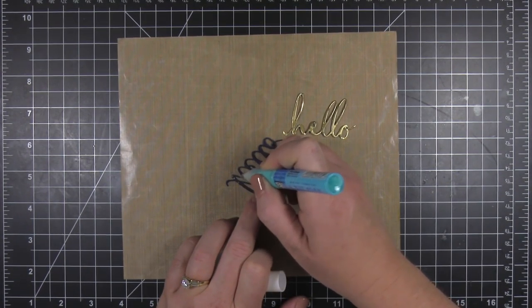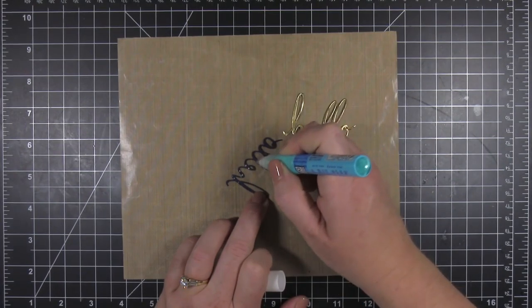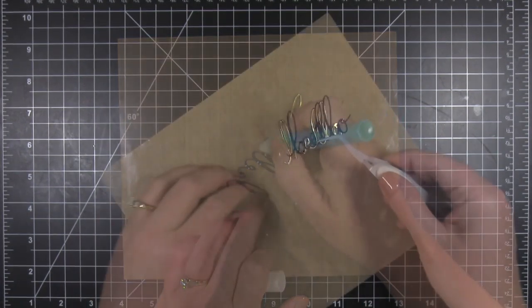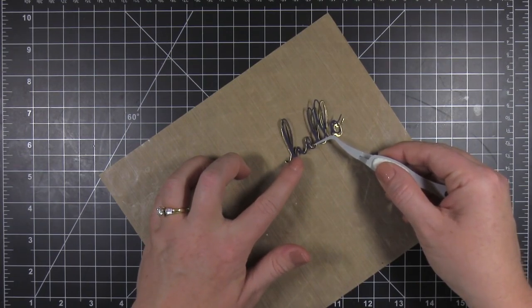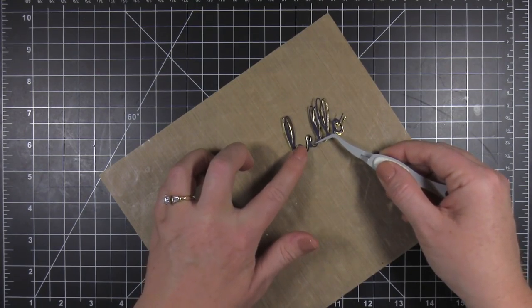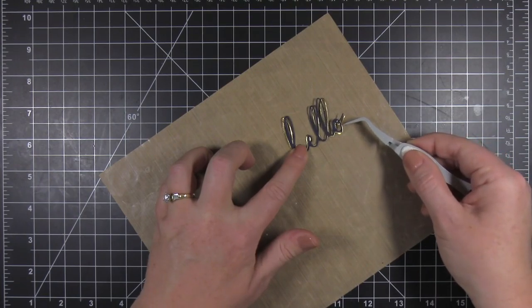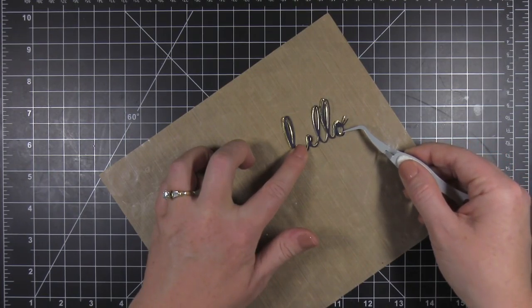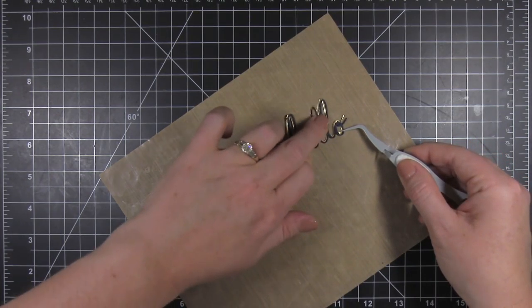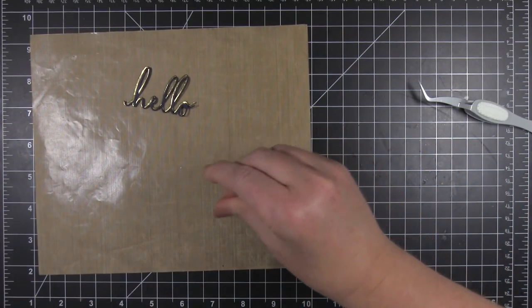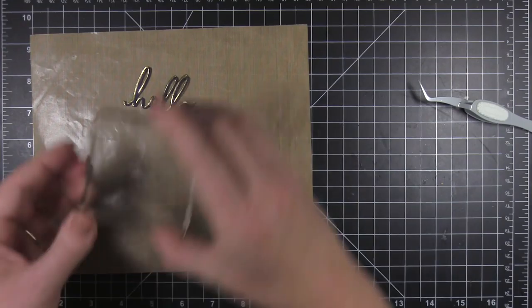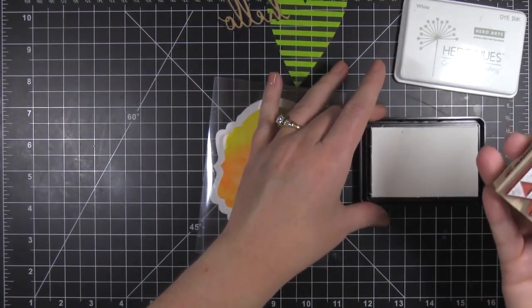Now, I've cut this fancy hello die out of navy card stock as well as some metallic card stock from Tim Holtz. And I'm just adding a little Zig two-way glue pen to the navy piece. And I'm going to layer it right on top of that gold piece, but I'm kind of offsetting it just a bit. And this is a cool way to kind of create a shadow effect behind your die. And then I'm just going to set this aside to dry and I'm just placing a stamp block over it to make sure that it sets up really nicely.